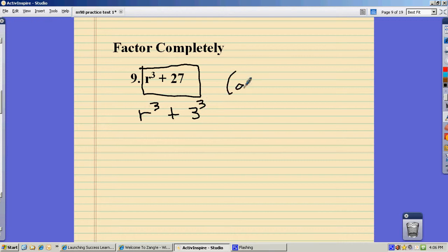And that's one factor that you just have to have memorized. And so it's first one plus second one, first one squared, opposite sign, first times second, and then last one squared.